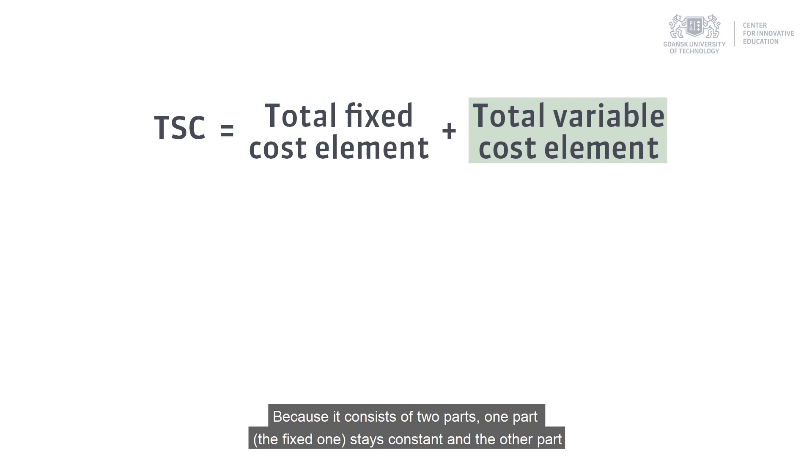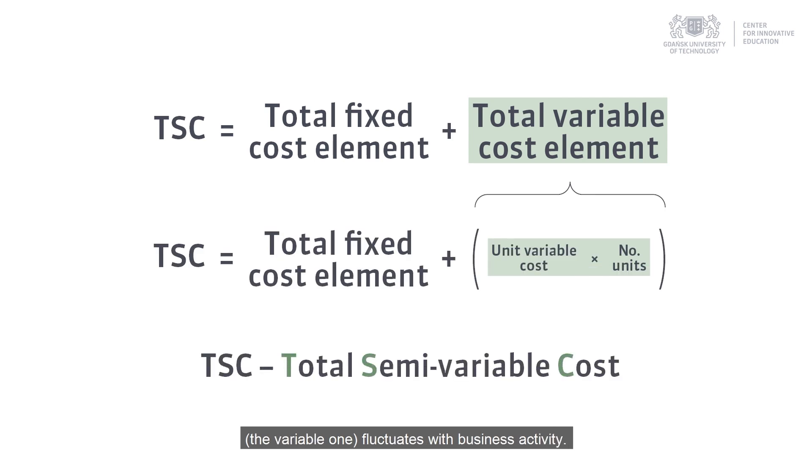One part, the fixed one, stays constant. And the other part, the variable part, fluctuates with the business activity. The formula for this relationship looks like this.